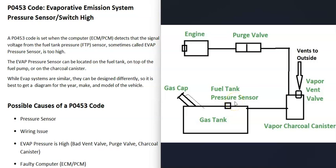There's also a fuel tank pressure sensor, or EVAP pressure sensor, that the computer uses to monitor what's going on inside the system. When you get a P0453 code, the computer is seeing that the pressure is high for some reason, and that needs to be troubleshot.